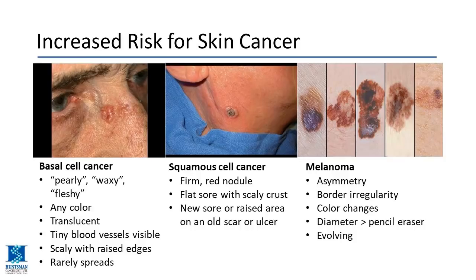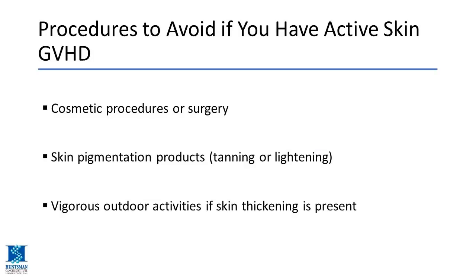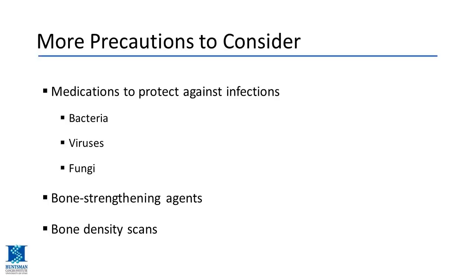Melanoma doesn't only occur on sun-exposed areas — sometimes there's an abnormal brown lesion along the nail bed, so always check your nails and toenails. Procedures to avoid with active skin GVHD include cosmetic procedures or surgery, skin lightening or tanning products, and vigorous outdoor activities with intense sunlight exposure. Patients on steroids or immune suppression should be on preventative antibiotics — antifungals, antibacterials, and acyclovir to prevent shingles — as well as bone strengthening agents, vitamin D, and calcium.